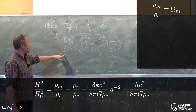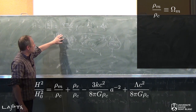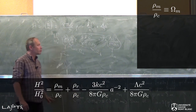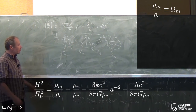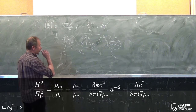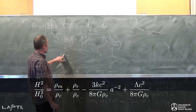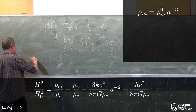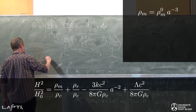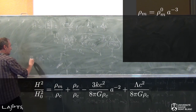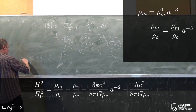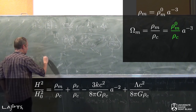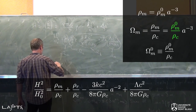Par exemple, si Ω_M vaut 1,5, ça veut dire que ρ_M vaut la moitié de ρ_C, c'est-à-dire l'équivalent de trois masses du proton par mètre cube. Et ce qui est remarquable, c'est qu'on sait comment ces grandeurs-là évoluent au cours de l'expansion. Par exemple pour la matière, on a vu que ρ_M était égal à ρ₀_M fois A puissance moins 3 ; si on divise par ρ_C, ça donne Ω_M égal à ρ₀_M sur ρ_C fois A⁻³, et cette quantité-là, on l'appelle Ω_M0 — c'est la valeur actuelle du paramètre cosmologique Ω_M.